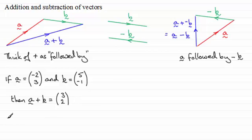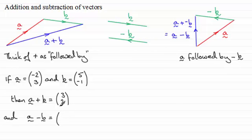For the subtraction a minus b, we just subtract the components. So we have minus two minus five, which is minus seven, and three minus minus one, which is four. So we get the column vector (-7, 4). Very easy idea.